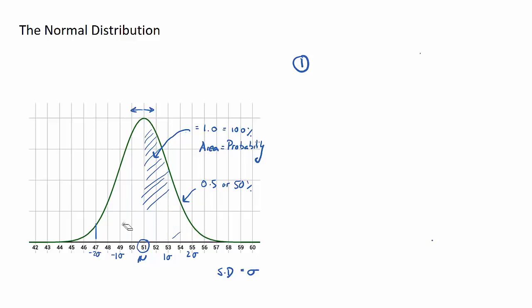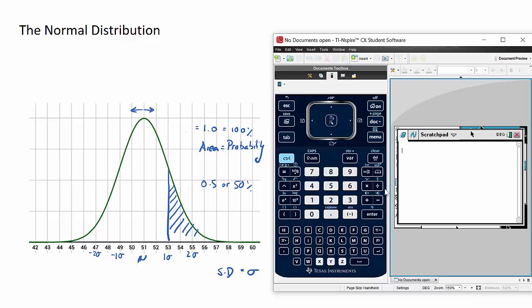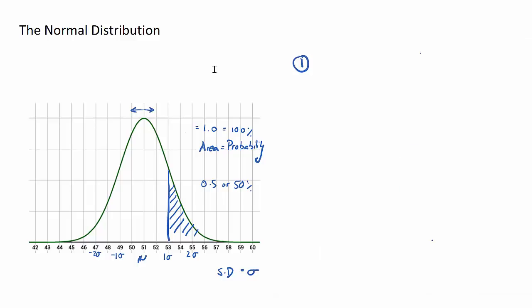So for example, let's just rub this out. How many students achieved a mark greater than 53? What that means is let's shade this area here. What is that area? Now in order to find that we're going to use the normal CDF function.